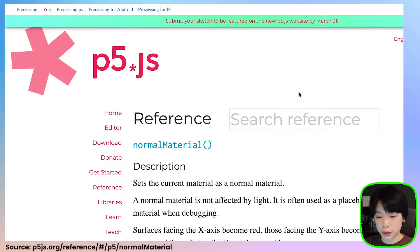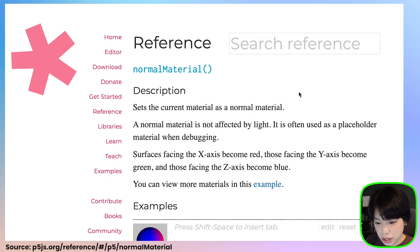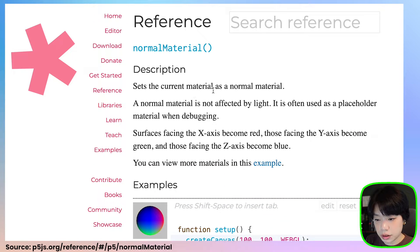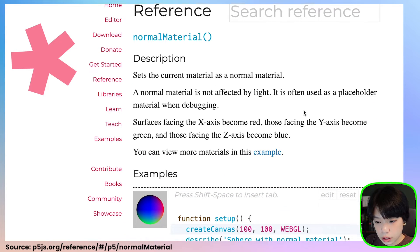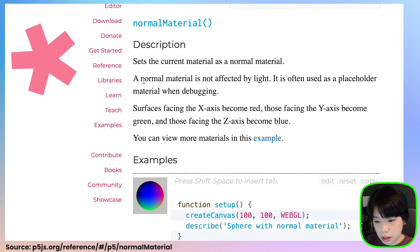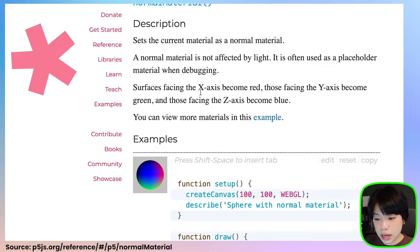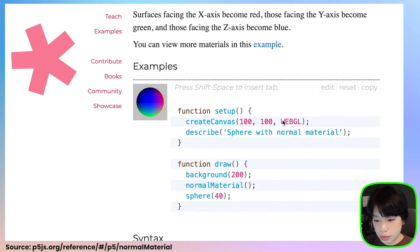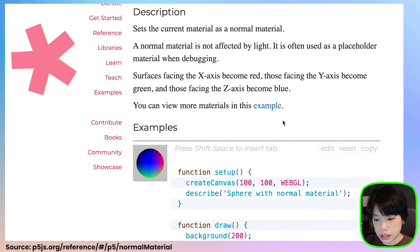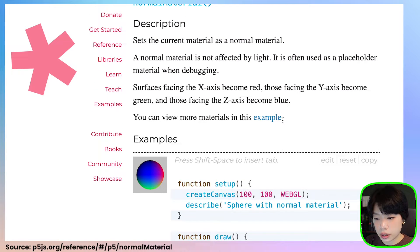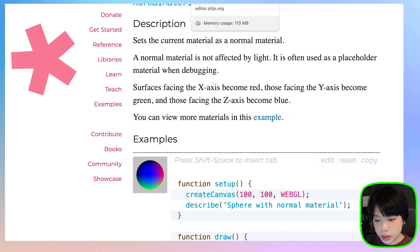Let's look at the reference page to see what normalMaterial does. It sets the current material as a normal material, which is not affected by light and is often used as a placeholder when debugging. Surfaces facing the x-axis become red, those facing the y-axis become green, and those facing the z-axis become blue. So basically it gives us this really nice shade of red, green, and blue.